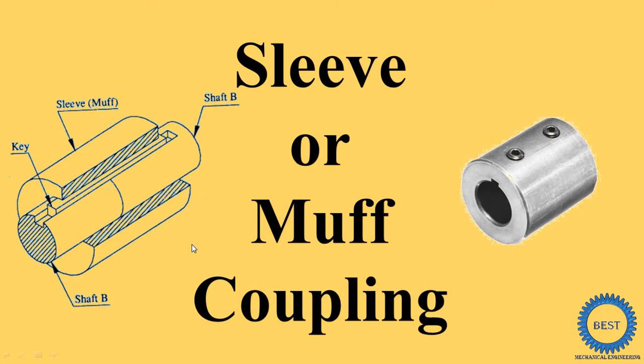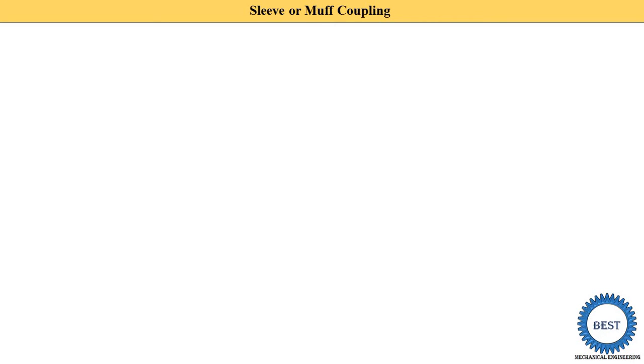In this video I explain sleeve or muff coupling. We already know what coupling is - coupling is used to connect two shafts. Sleeve coupling is one type of rigid coupling. The basic two categories for coupling are rigid and flexible.